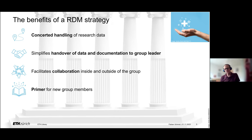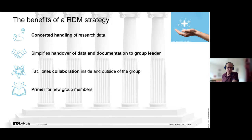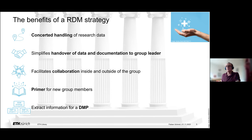It's also a primer for new group members. You have a resource on a wiki, and people who joined the group recently can draw on this resource to answer the first basic questions when they start. This can also serve as a basis for discussion — new group members learn all the practices agreed upon in the group and can start discussions to improve the research data strategy. Last but not least, you can also extract information for a data management plan, which reflects the strategy on the level of an individual research project. People can take information from there, slightly modify it, and have their data management plan at hand.